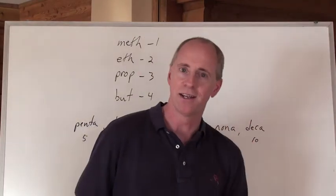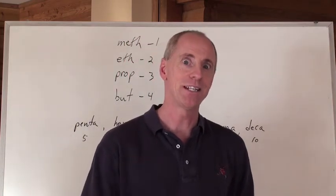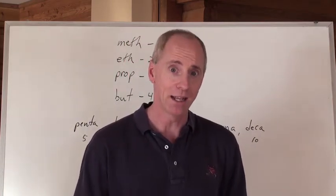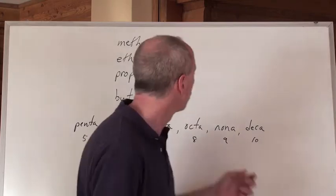Eleven would be undeca, and twelve is dodeca, and thirteen is trisca, like triscadecaphobia, which is the fear of the number thirteen.